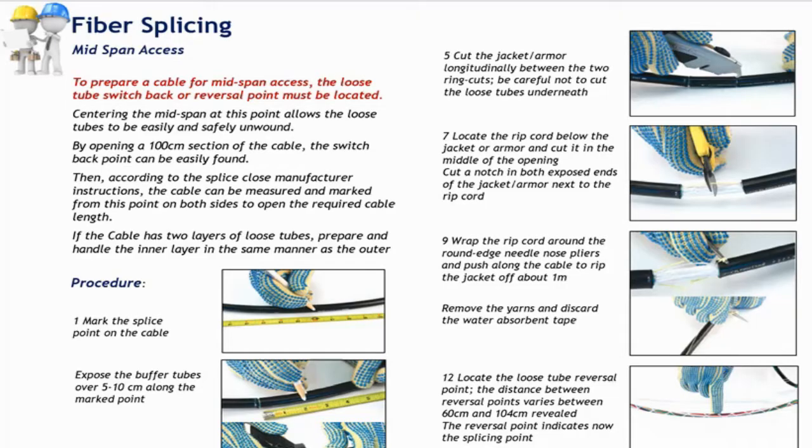Now we're going to see the mid-span access cable preparation. The cable preparation is pretty much the same with the difference that we are opening the cable at the mid-span, so not at the cable end. And that's what needs to be done to discover the proper place where the fiber tubes have to be unwound. The length to open, usually required, is about five meters. It depends on the splice closure, so please follow the closure manufacturer instructions.